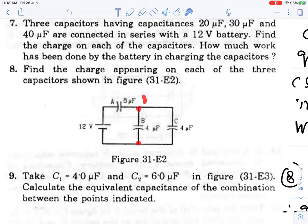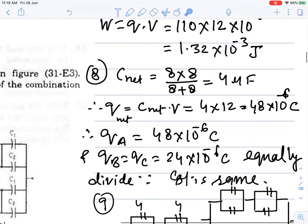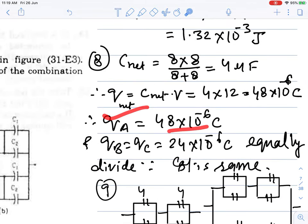Now we have to solve question 8 with capacitors in series and parallel. Looking at the circuit, some are in series and some are in parallel. The total charge needs to be calculated. For the given configuration, we first find equivalent capacitance. The total charge will be divided.